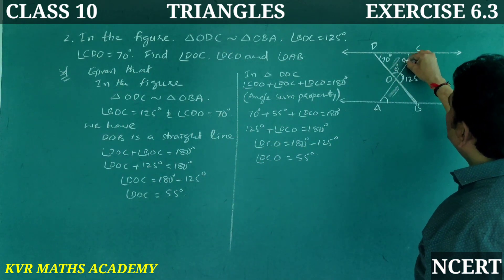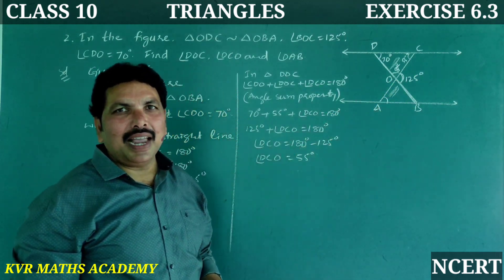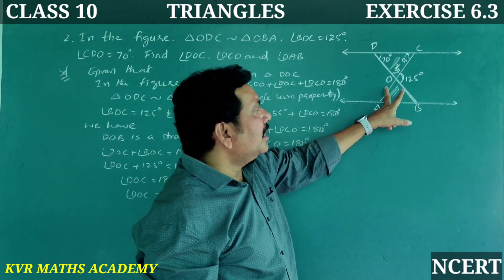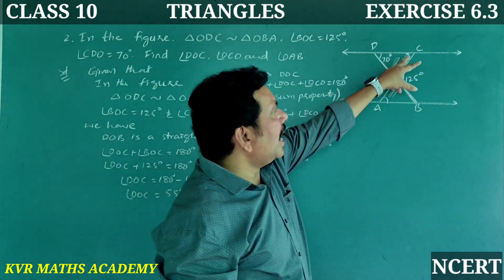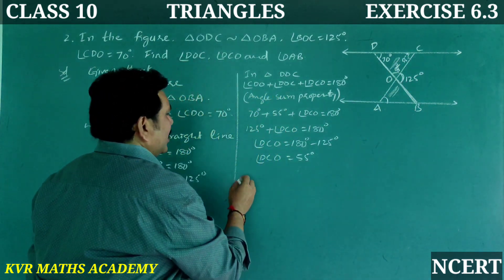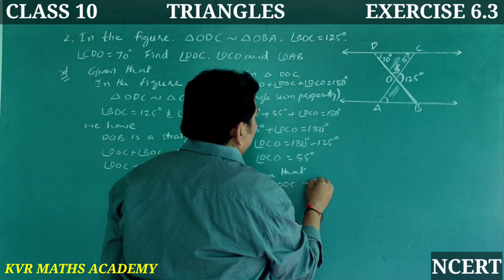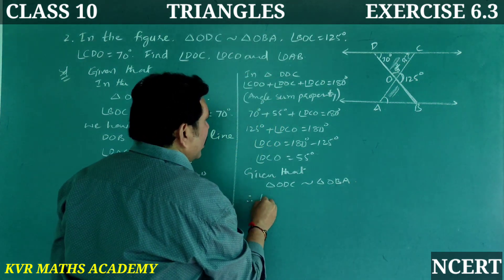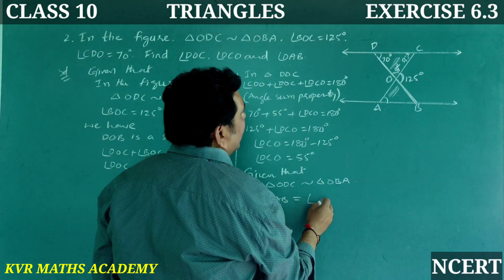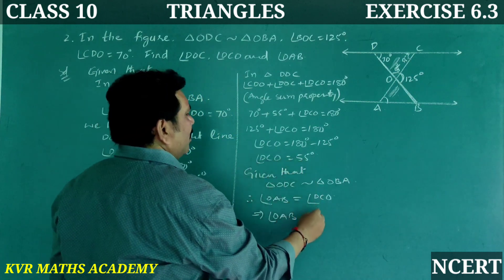Now we need to find angle OAB. Since triangle ODC is similar to triangle OBA, the corresponding angles are equal. Therefore angle OAB is equal to angle DCO. So angle OAB is equal to 55 degrees.